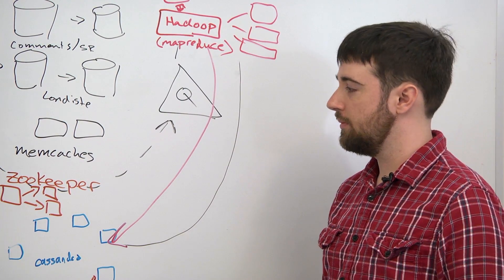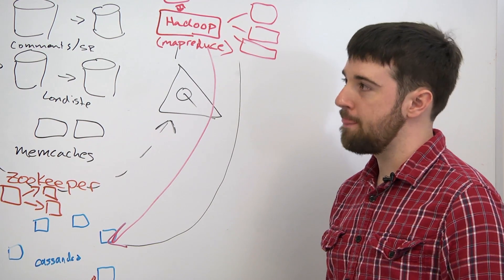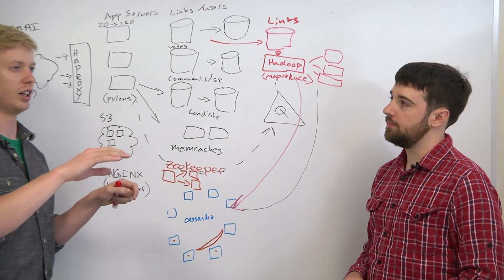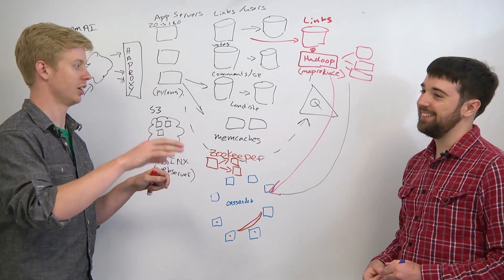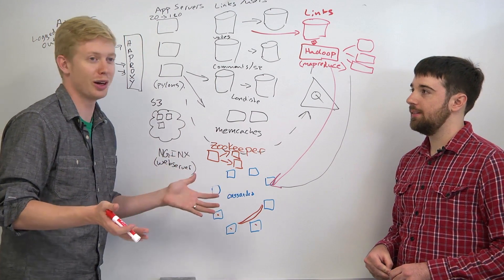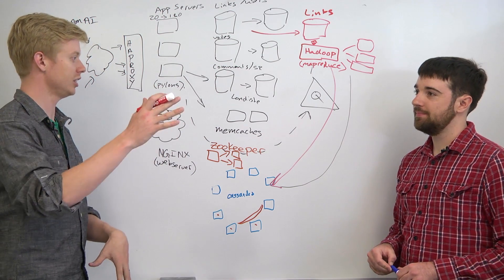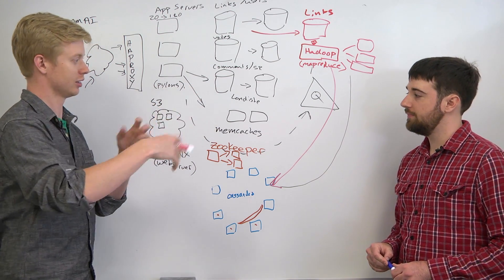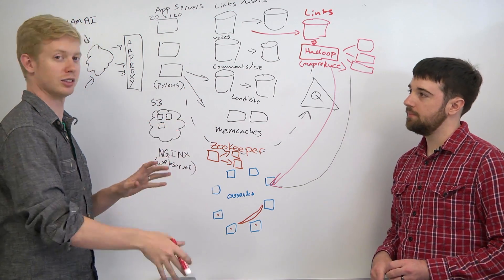We actually store our data in S3 in these big text files. And we just say, run this query using 20 machines over all this data. And you can basically say, how long do I want to wait? And Amazon will bring up all the machines, load your data in, run the job, output it, and then shut all the machines down.